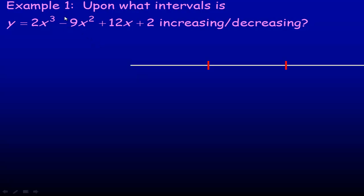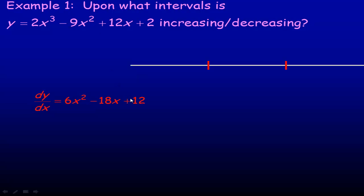In example one, it says on what intervals is this function increasing or decreasing. We investigate the sign of the derivative to figure out where it's increasing and where it's decreasing, so we need to find the derivative of this cubic function. Using the power rule: the derivative of 2x³ is 6x², the derivative of -9x² is -18x, and the derivative of 12x is 12. The constant 2 has a derivative of 0, so the derivative is 6x² - 18x + 12.